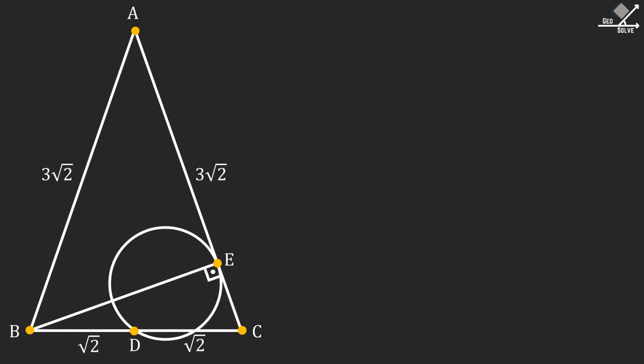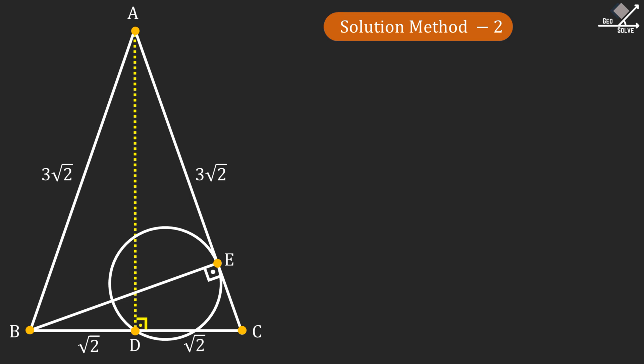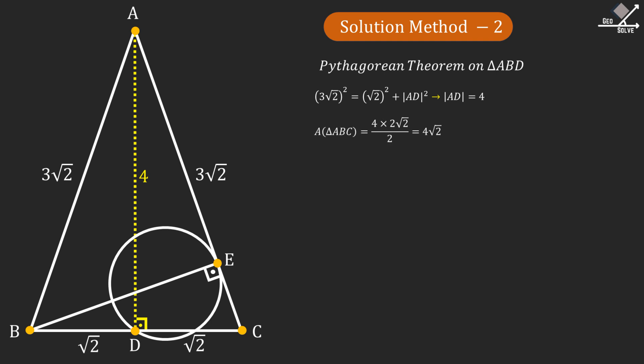Now let's move on to our second solution method. First let's connect point A and point D. Since ABC is an isosceles triangle and D is the midpoint, line segment AD is perpendicular to line segment BC. Now we can apply the Pythagorean theorem on triangle ABD to find the length of AD. From here AD can be found as 4 units. Now we can find the area of triangle ABC as 4 times square root of 2.